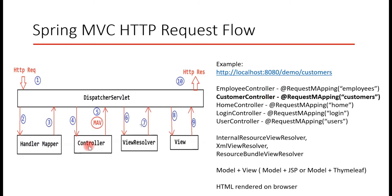That is the fourth step. The controller is responsible for processing the request — it creates the model data and returns a model and view to the DispatcherServlet. For example, if we want to get a list of customers from the database, the controller retrieves that list, stores the customer data in the model, and returns the model and view to the DispatcherServlet. That is the fifth step — now the DispatcherServlet has the model and view.